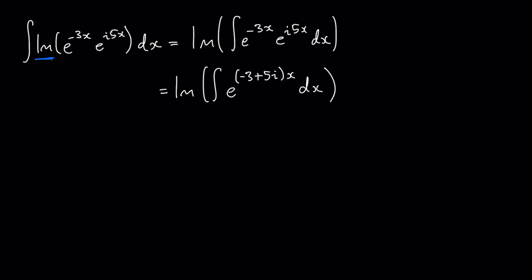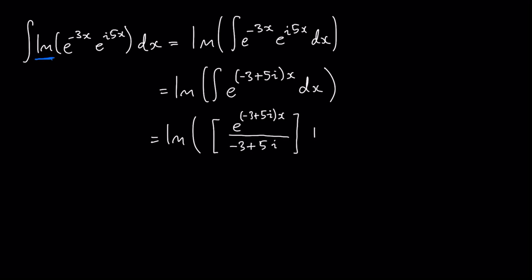Now it's really just an exponential, so I know how to integrate exponentials. What I'm going to end up with is e to the negative 3 plus 5i times x over negative 3 plus 5i. And we have a plus c here. So we have the imaginary component of e to the negative 3 plus 5i times x over negative 3 plus 5i.